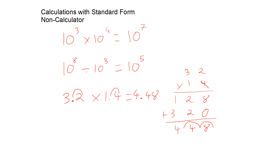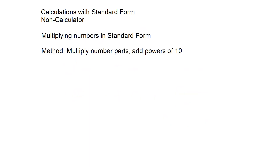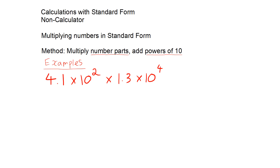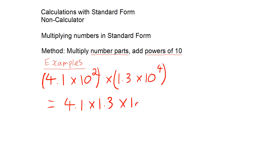If you can do all of these skills, then you should have no trouble with what we're going to do today. To multiply numbers in standard form, we multiply the number parts and then add the powers of 10. So here are some example questions. If I wanted to do 4.1 times 10 to the power of 2, multiplied by 1.3 times 10 to the power of 4, because you can multiply in any order, you could rewrite this as 4.1 times 1.3 times 10 to the power of 2 times 10 to the power of 4.